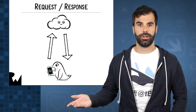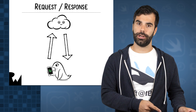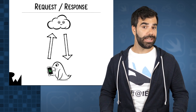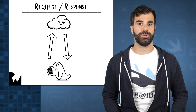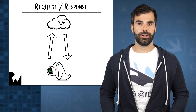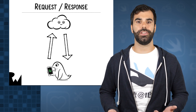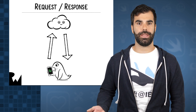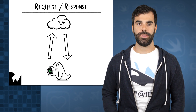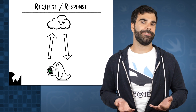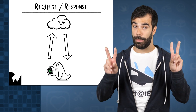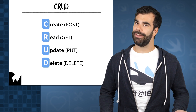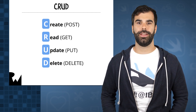The server will take a request, order other components to do whatever the request says, and then send the appropriate response. You'll refer to your server in this course as your API, or Application Programming Interface. Think of your server as the interface for your entire backend. When it comes to HTTP requests, you may have seen the acronym CRUD before.